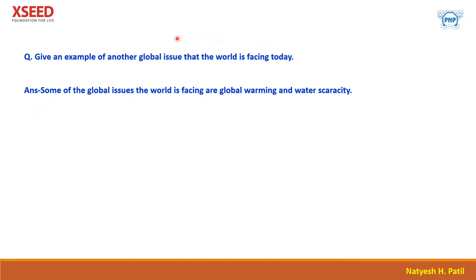The next and last question is: give an example of another global issue that the world is facing today. Just like plastic is a global issue, there are more problems — that is global warming and water scarcity. There are many villages that don't get adequate drinking water or water for farming, so there is too much water crisis. With global warming, the temperature increases too much during summer season because of global warming.